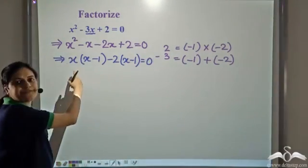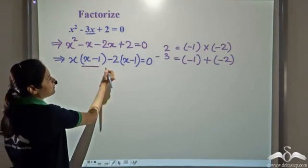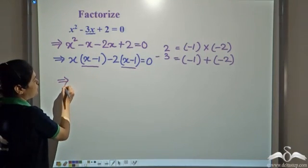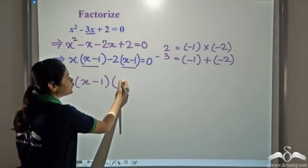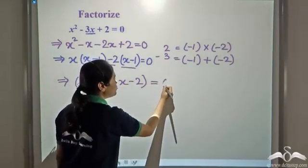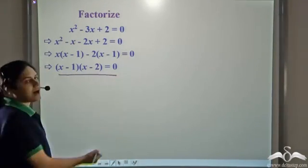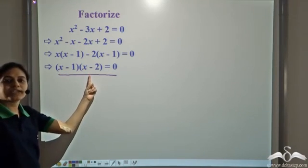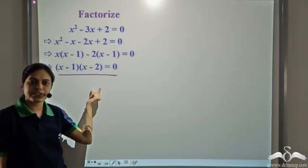We have x times (x minus 1) plus negative 2 times (x minus 1) equals zero. Now from this entire expression, we can take x minus 1 common, giving us x minus 1 times x minus 2 equals zero. So this is what we get after factorizing the left hand side. The first step is done — we have factorized the left hand side.